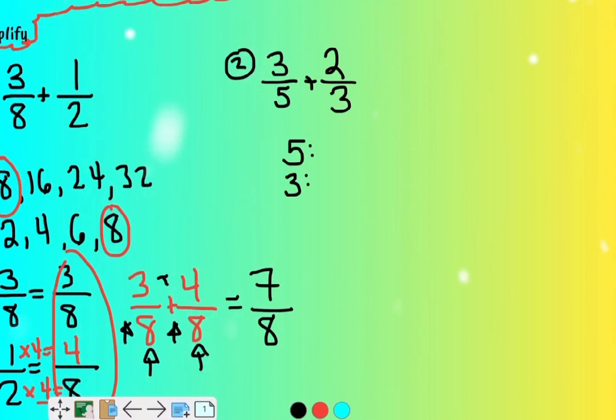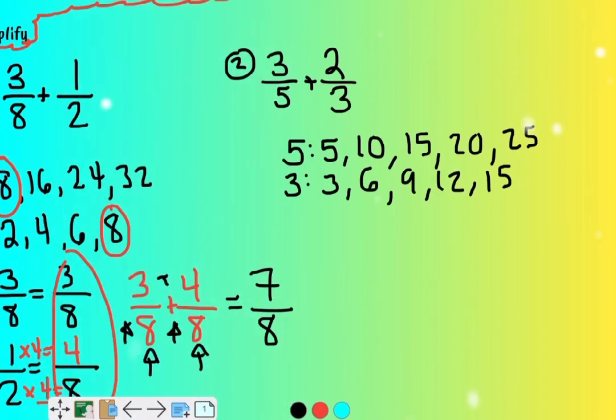Five times one is five, three times one is three, five times two is ten, three times two is six, five times three is fifteen, three times three is nine, twenty, twelve, twenty-five, and fifteen. I stop there because they both have that fifteen in common.